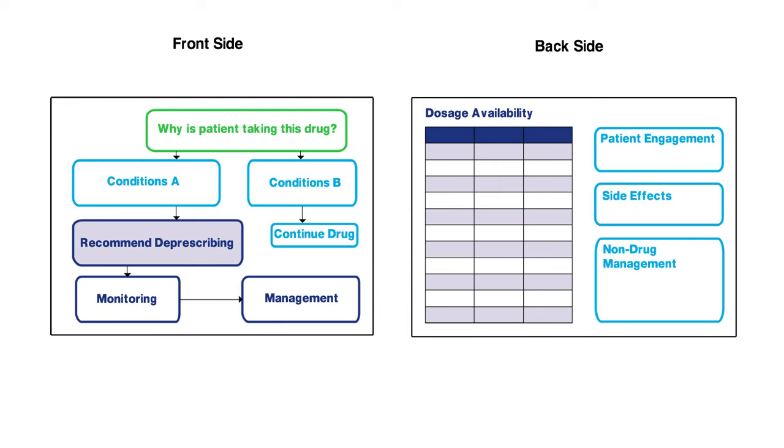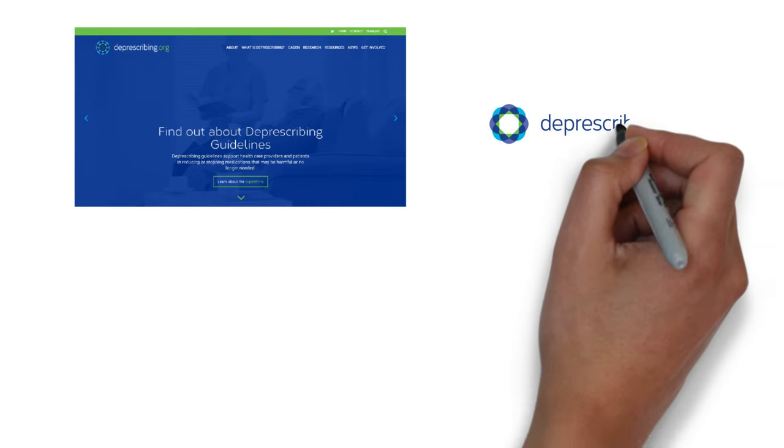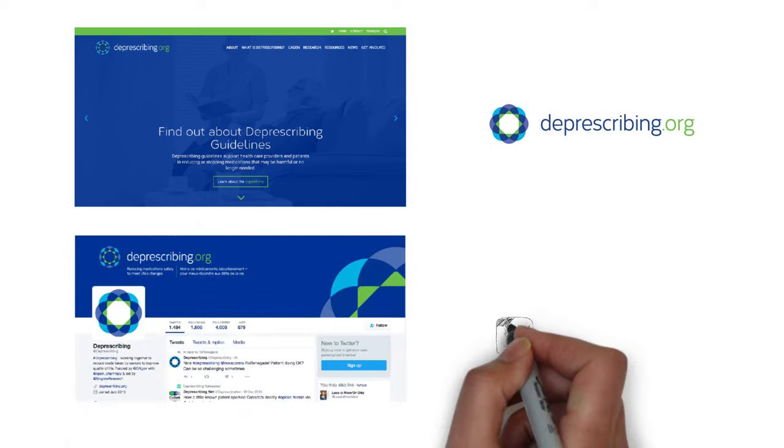In our research using these algorithms, health care providers have told us how useful they have been to aid decision making. Each of the currently available deprescribing algorithms can be found at deprescribing.org. Our future research will focus on how these guidelines and algorithms can be integrated into usual practice and the impact of using them on patient care. You can check in on the progress of our research at deprescribing.org and by following us on Twitter.